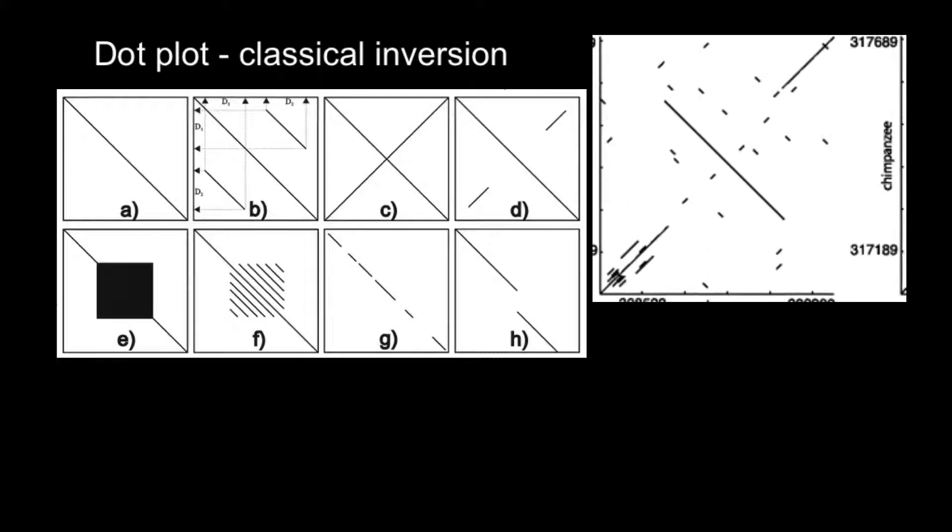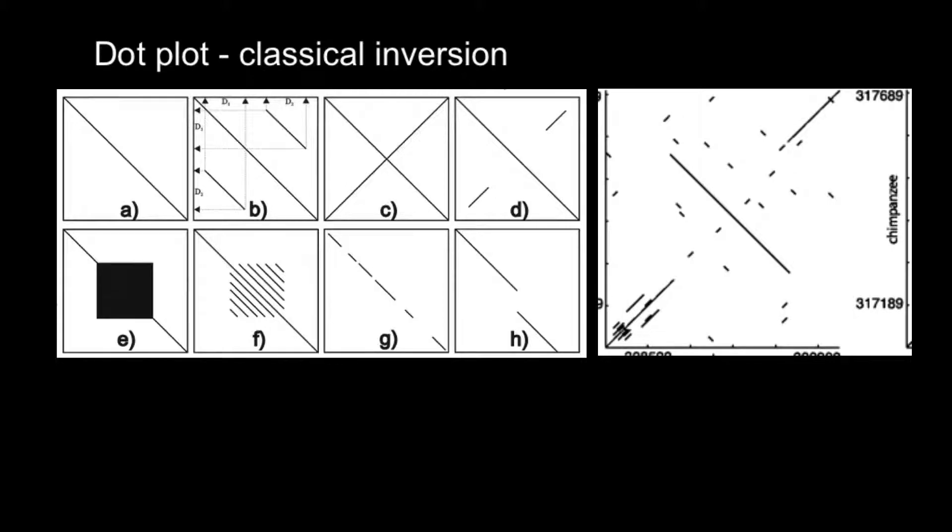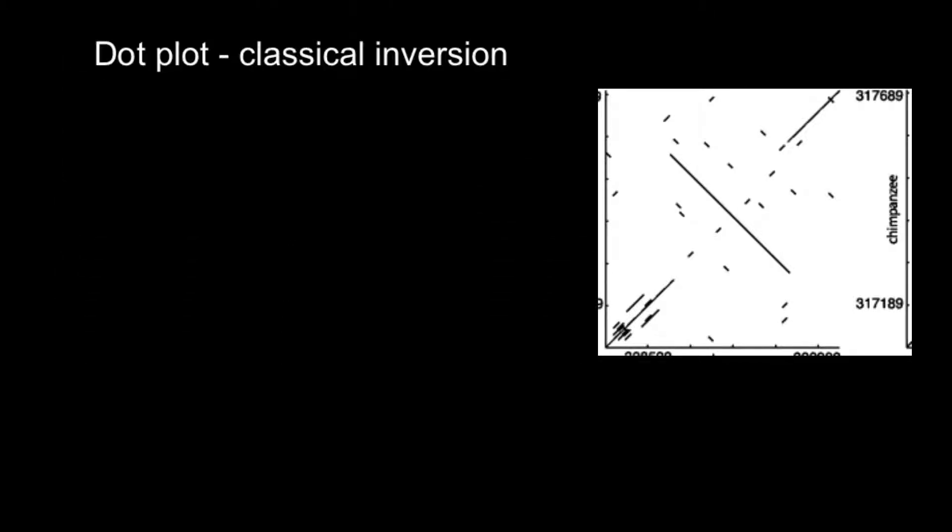You can often see such a picture as this one. So how can we interpret such a picture like this? This is an example of the classical inversion. So let me clean a space here.